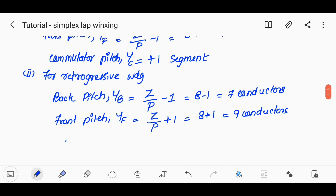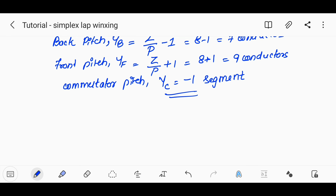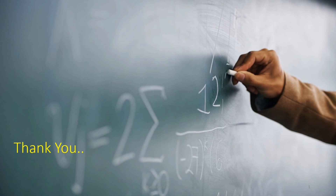Similarly, commutator pitch: for progressive winding, commutator pitch Yc is equal to plus 1 segment. For retrogressive winding, commutator pitch Yc is equal to minus 1 segment. For retrogressive winding, back pitch Yb equals Z divided by P minus 1, that is 8 minus 1 equals 7 conductors.